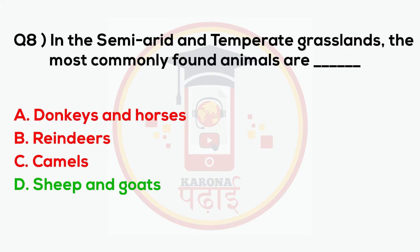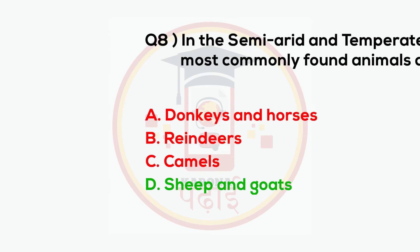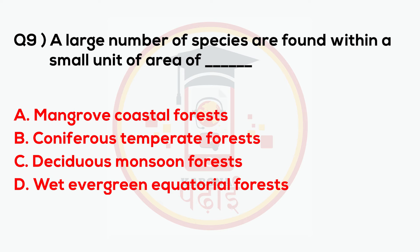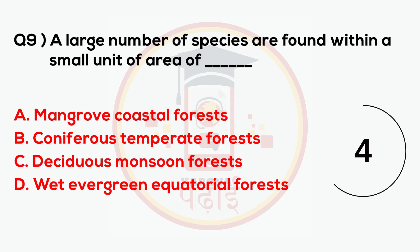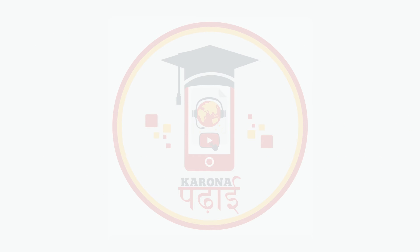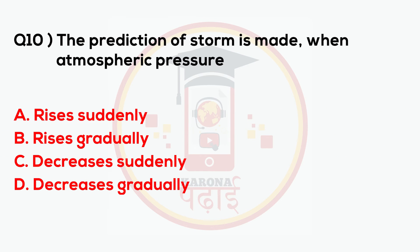Answer: Sheep and goats. A large number of species are found within a small unit of area of blank — answer: wet evergreen equatorial forest. The prediction of a storm is made when atmospheric pressure does what?